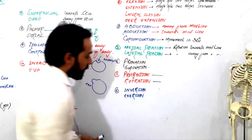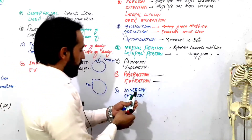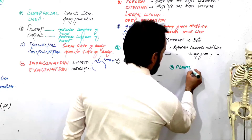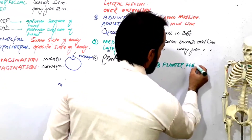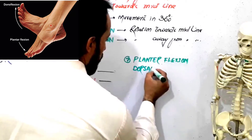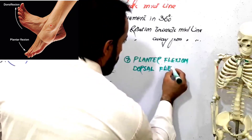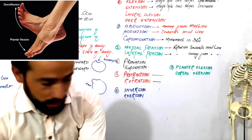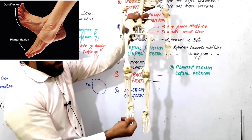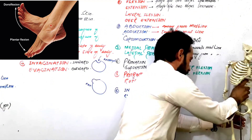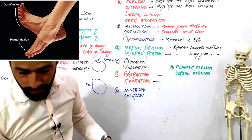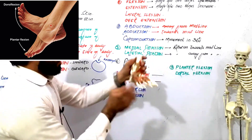There is another movement called plantar flexion and dorsal flexion — number seven. Now look, if I bring my friend here — we have a large skeleton and it's a bit difficult to demonstrate right now. This is the foot, and both plantar flexion and dorsal flexion are movements of the foot.